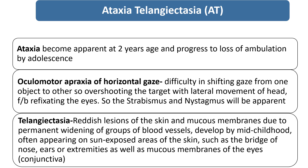Regarding characteristic features: ataxia becomes apparent by the age of 2 years and will progress to loss of ambulation by the adolescent period. In oculomotor apraxia of horizontal gaze, when we tell the child to fix the gaze over a target, the child will have difficulty shifting gaze from one object to another. The child will overshoot the target, with adjustment through lateral movement of the head. During refixation, the child will show squint and nystagmus movement.